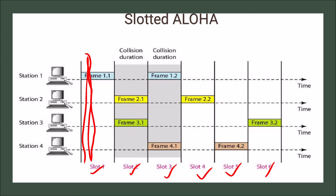In time slot 2, station 2 sends frame 2.1 and station 3 also sends frame 3.1 at the start of slot 2, so a collision occurs — slot 2 is a collision duration. Also at the start of slot 3, station 1 sends frame 1.2 and station 4 sends frame 4.1, so again there is a collision. Slots 2 and 3 are both collision durations.